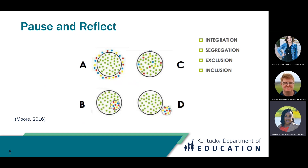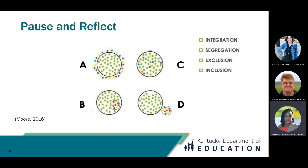Model D would be segregation. Not only are the students not with their grade-level peers, they are outside of the classroom and not engaged in any grade-level content or interaction with their peers. Model C is the goal model for co-teaching, where students are in the classroom getting exposure to grade-level content as well as interaction with their grade-level peers.